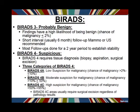BI-RADS 4C is a very suspicious category with a chance of malignancy between fifty and ninety-five percent. Doctors use this category when they're not entirely sure it's cancer, but it has really ugly features pointing toward that. BI-RADS 4C means that even if we biopsy it and it comes back benign, we're most often still going to surgically excise that area — simply because of its features.